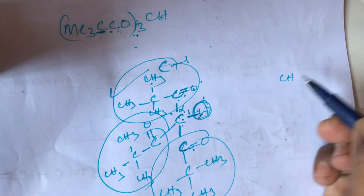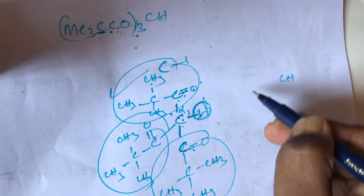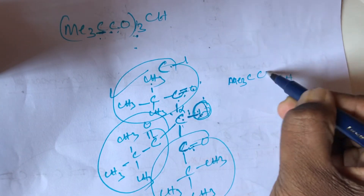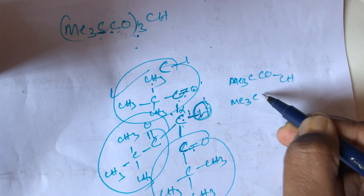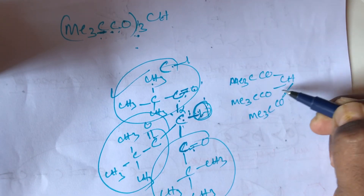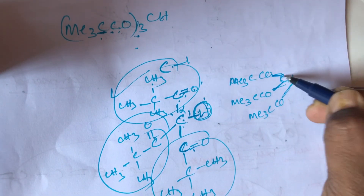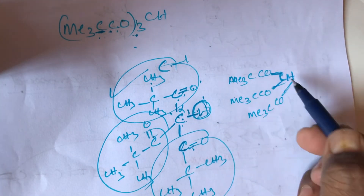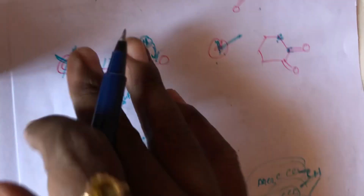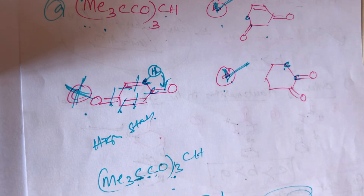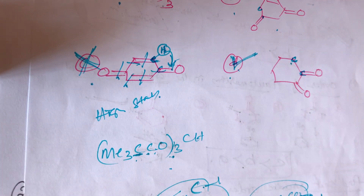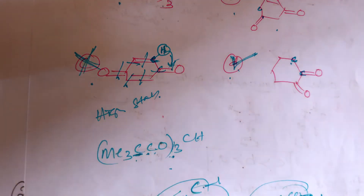We can write the structure as CH with Me3CCO, Me3CCO, Me3CCO — this first compound is also participating in tautomerism. These are previous exam questions from tautomerism. If you like my video, please like, share, and comment.